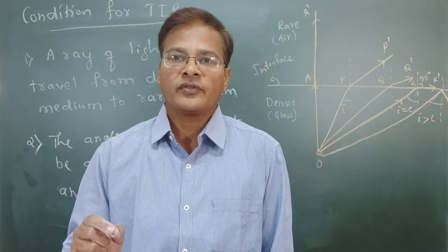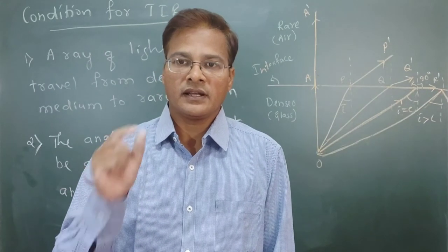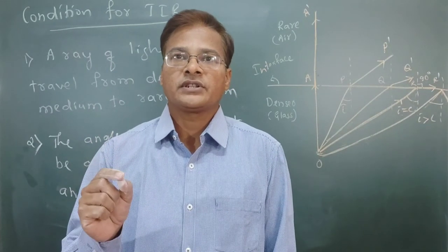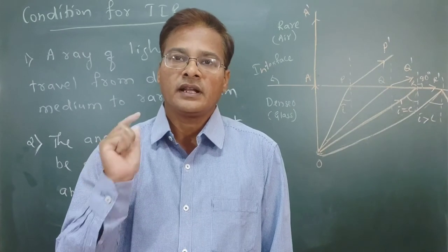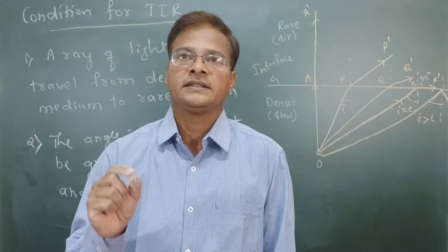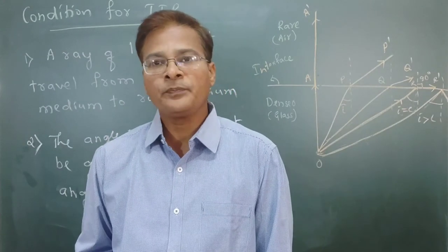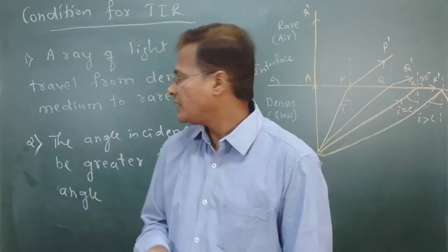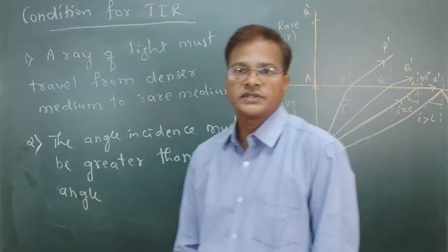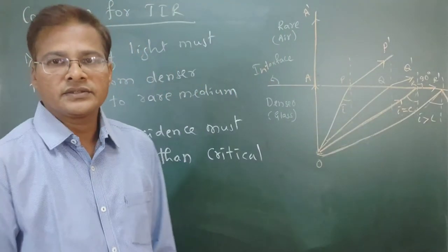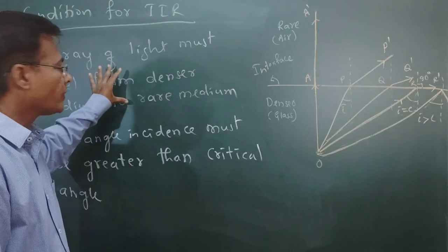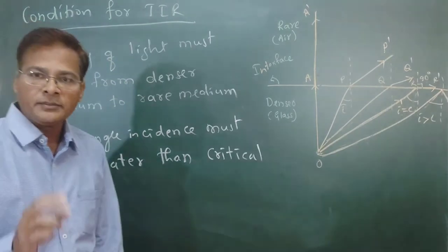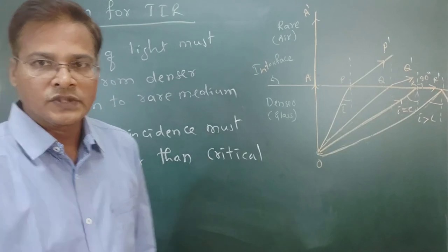So when a ray travels from denser medium to rarer medium — first condition satisfied — and the angle of incidence is greater than the critical angle — second condition satisfied — then it is called total internal reflection. If you write these two conditions down, you will get two marks. You have to implement these conditions correctly.